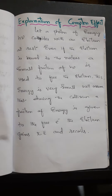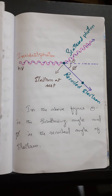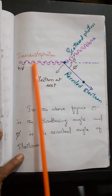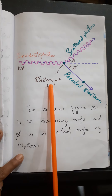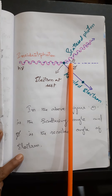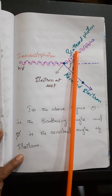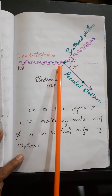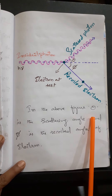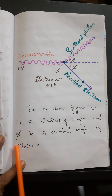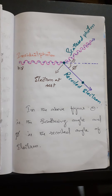In the diagram, this is the incident photon of energy h·nu, this is the rest electron, and the scattered photon and recoiled electron are shown. Theta is the scattering angle of the photon and phi is the recoil angle of the electron.